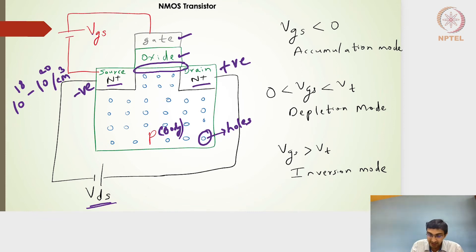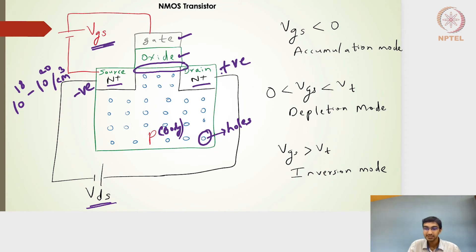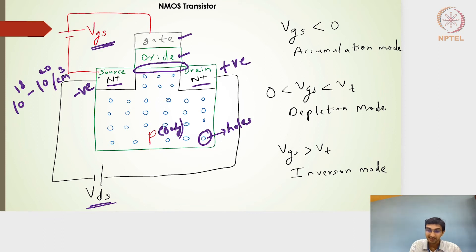Hence, VGS — the gate-to-source voltage — is being applied from the gate to the source side, which will now create an electrical field from the gate. This gate is going to attract something so that it forms a channel connecting the source and drain, and thereby the source will source the majority carriers and the drain is going to collect them. One bias is the VGS bias, which produces a vertical electric field. The other electric field created by the potential difference of VDS is a lateral electric field.